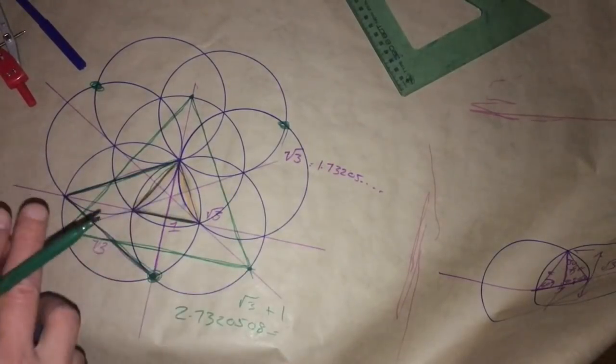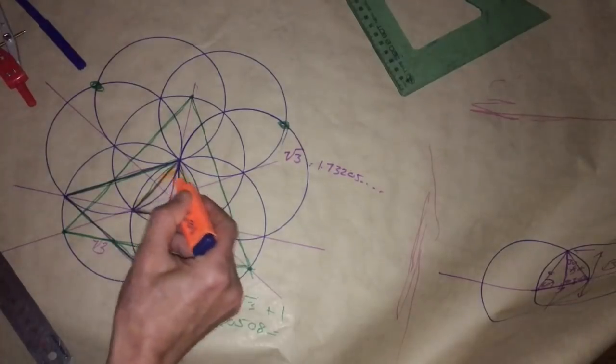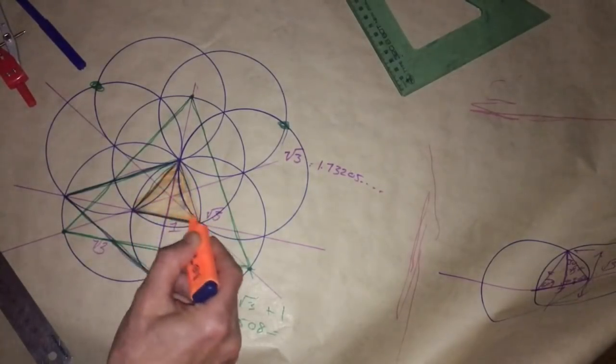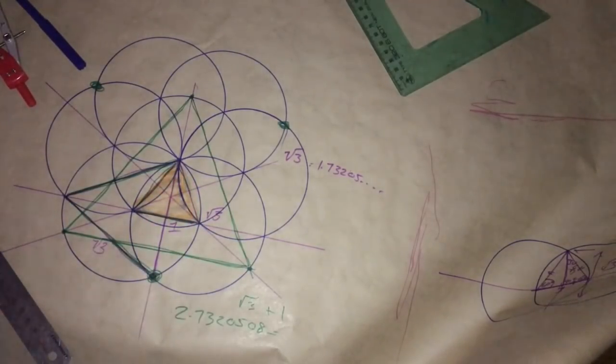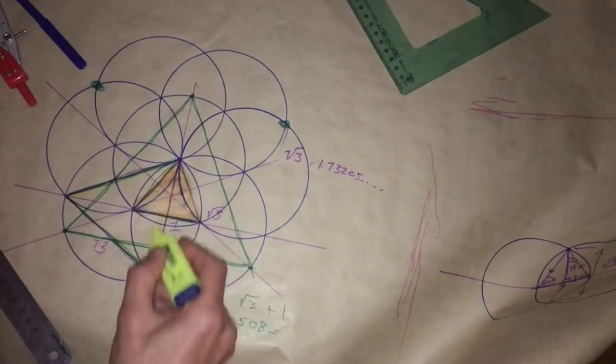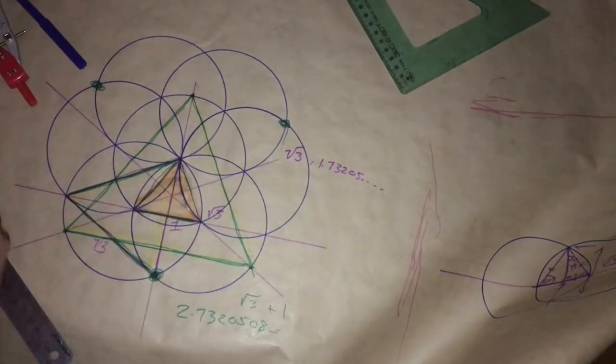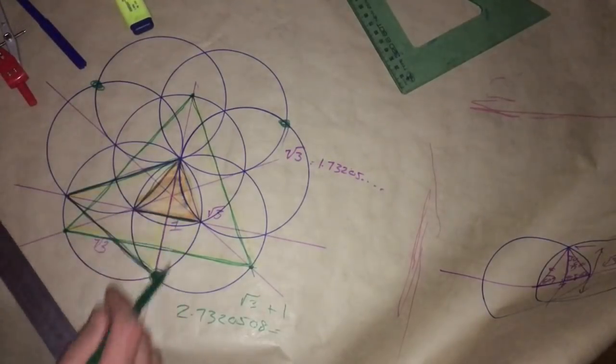Yep, okay so now we have another equilateral triangle. The first one on the inside, then we have our second, that's not showing up too well, and then we have our third. Now we have a fourth.